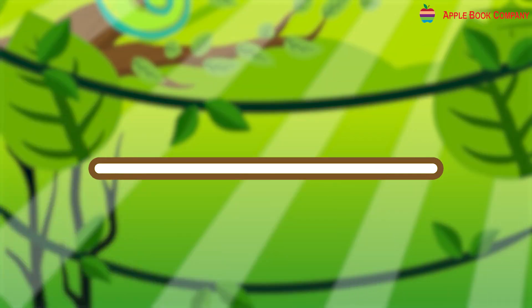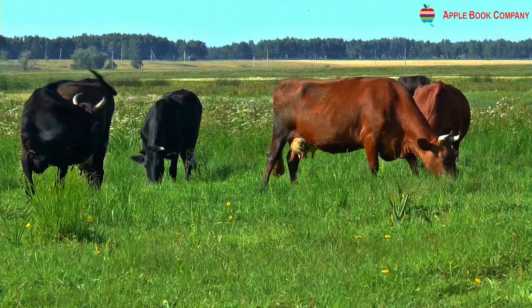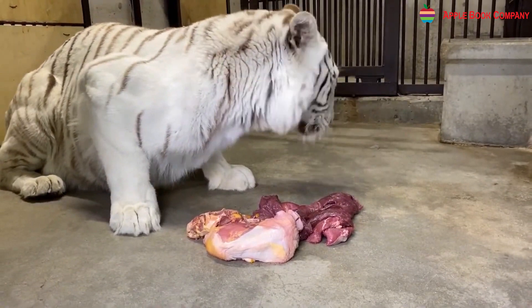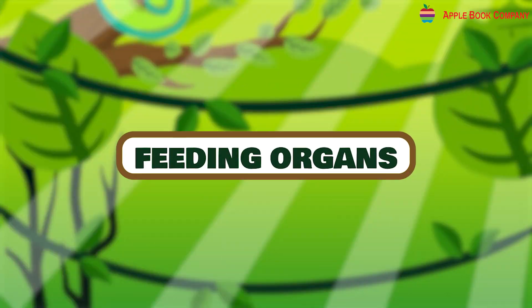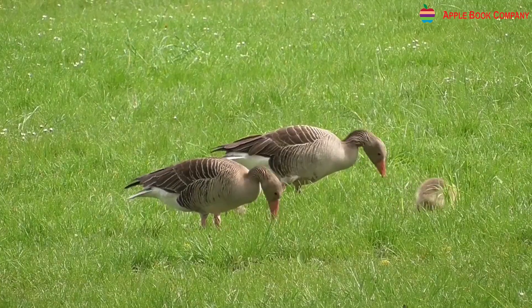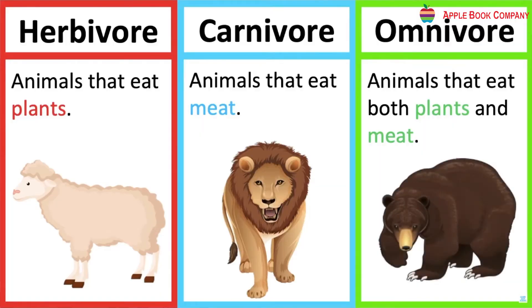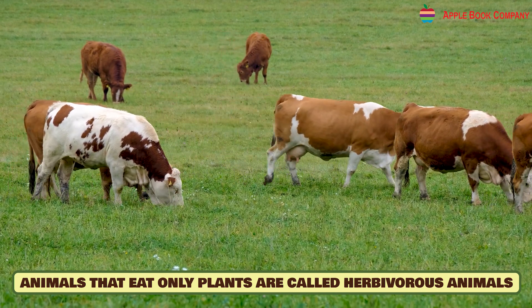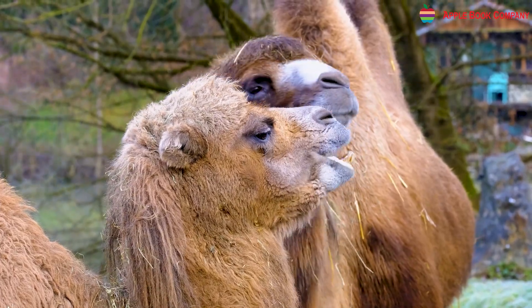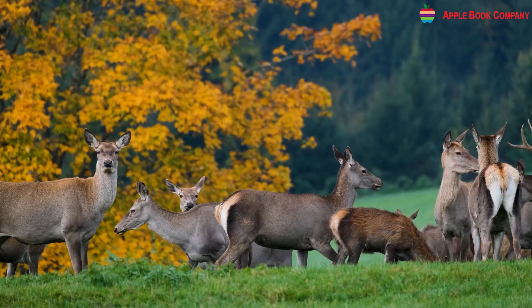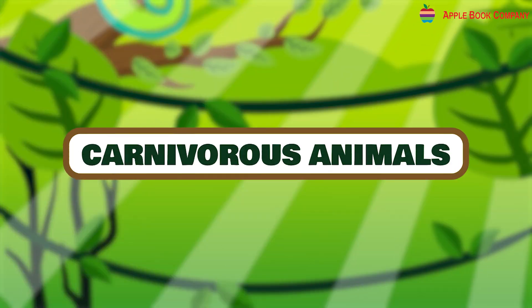Feeding in animals. Different animals eat different types of food. Their feeding habits depend on the type of food they eat. Organs of feeding are also suited to what they eat and how they eat. The feeding organs of animals are modified according to the kind of food they eat. On the basis of their feeding habits, animals can be classified as herbivores, carnivores and omnivores. Herbivores have sharp front teeth for biting and strong broad teeth for chewing. Animals like cow, deer, goat and giraffe are herbivores.